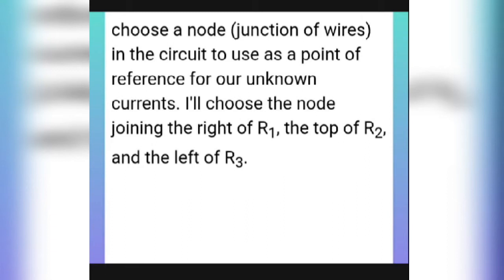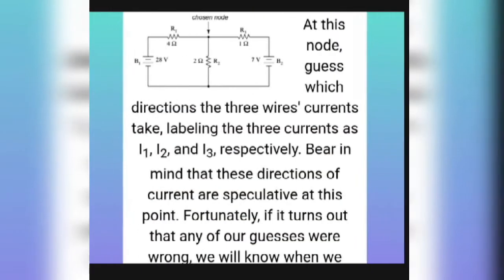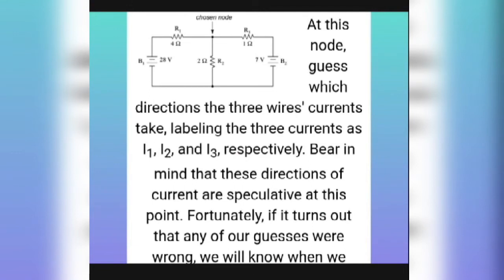This node is the reference point for the unknown currents. I will choose the node joining the right of R1, R2, and the left of R3. This chosen node is situated between three resistors. The three wire currents are labeled I1, I2, and I3 — the currents through the three resistors respectively. Bear in mind that these directions of current are speculated at this point.